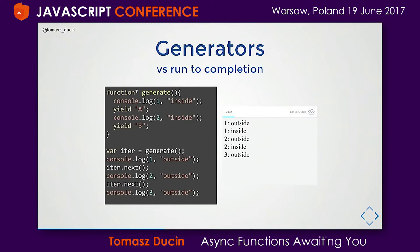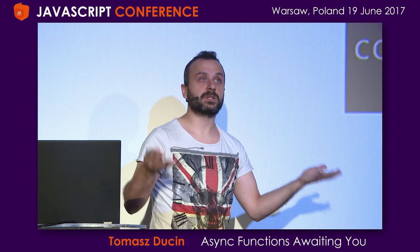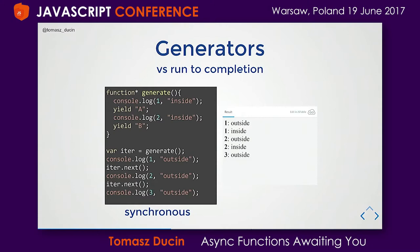Generators do not comply to the run-to-completion rule that we know from functions. Run-to-completion means a function needs to finish before anything else can be done in the next turn of the event loop. A generator can just stop after a yield and stay in memory. This is a completely different type of function execution, and the JavaScript community is not yet fully aware of how much we can do with generators.